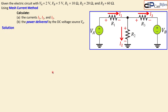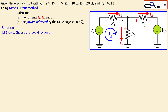Step one is to choose the loop directions. Using mesh current analysis, we need to set up the voltage equations for each loop. I can see two loops in this circuit. Let's choose a clockwise direction for the first loop and call that current IX, and also a clockwise direction for the second loop, calling that IY. You can also choose counterclockwise — the results will be exactly the same.